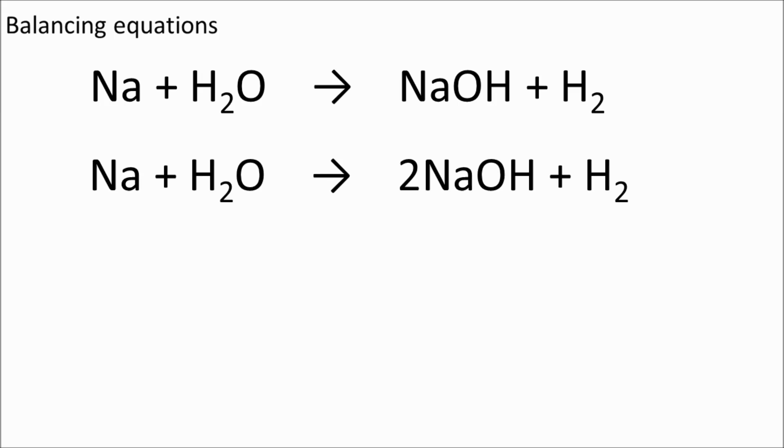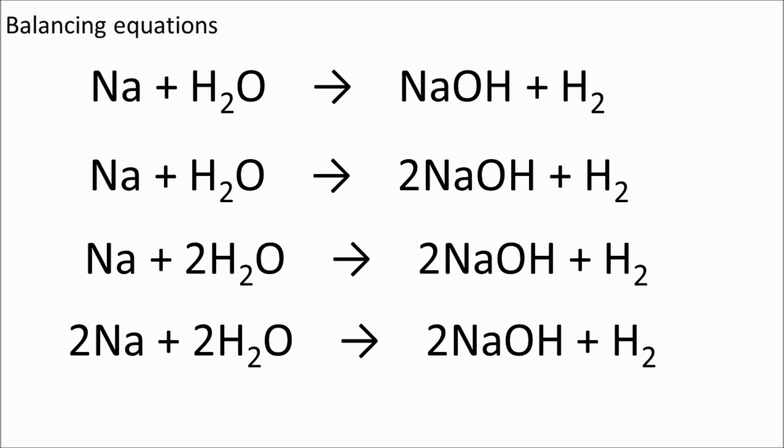Remember, you cannot mess with the little numbers. So what we're going to do is put a 2 in front of the sodium hydroxide, the NaOH. Now how does that stack up? We've got two on the left and four on the right. What do we do now? Let's put a 2 in front of the water molecule, and we've got four on the left and four on the right. Great, that's our hydrogen sorted out. Now we've messed around with that NaOH—we've given ourselves too many sodiums, haven't we? So now we've got one sodium on the left and two on the right. What are we going to do? A big number in front of that sodium. Excellent.